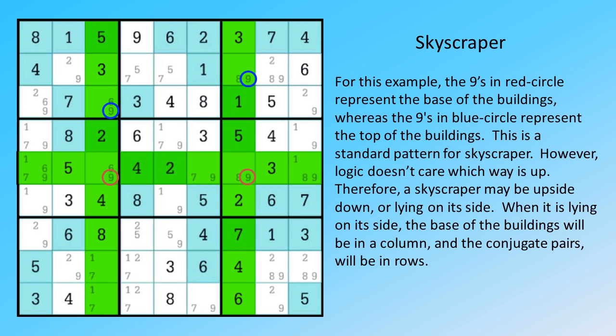For this example, the nines in red circle represent the base of the buildings, whereas the nines in blue circle represent the top of the buildings. This is a standard pattern for skyscraper.